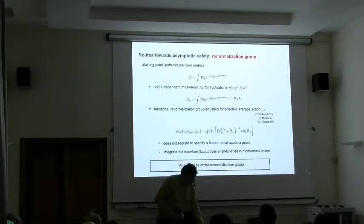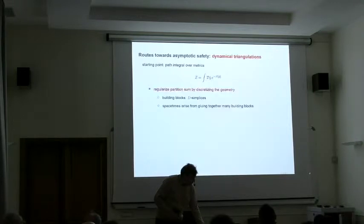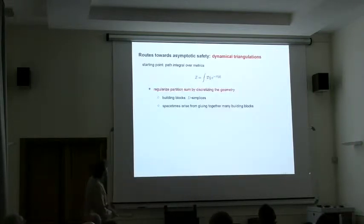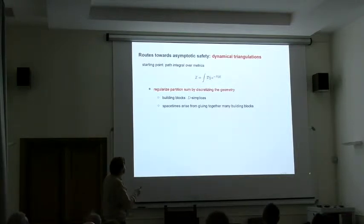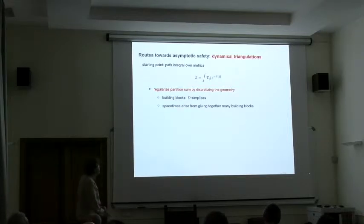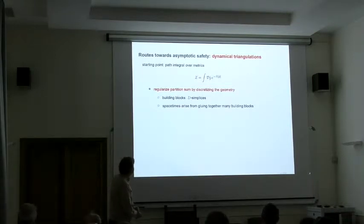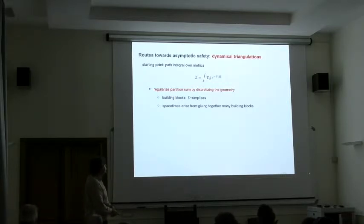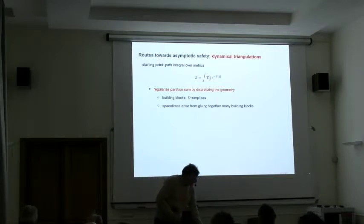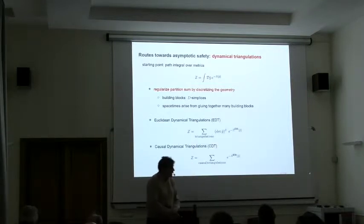This is the first half of the story. What else could I do? I can start from the same path integral. Instead of introducing the regulator, I can also discretize the geometry that I'm dealing with. In essence, I evaluate this partition sum on building blocks. Here, these are triangles in the simplest case. My geometry will appear from gluing together these triangles. This is also a path that had been taken by the community.